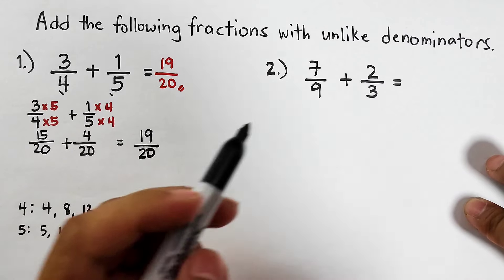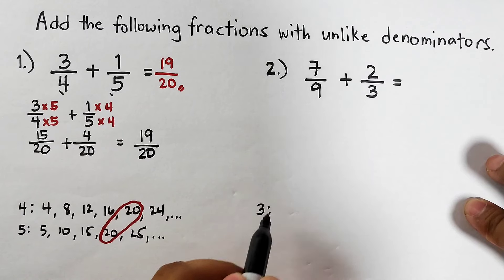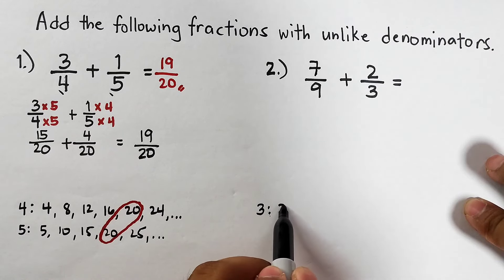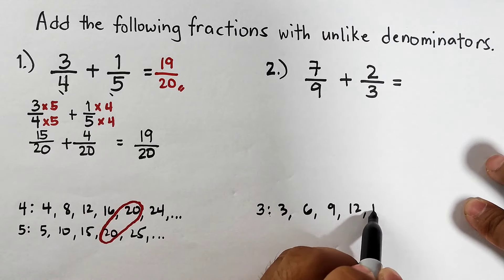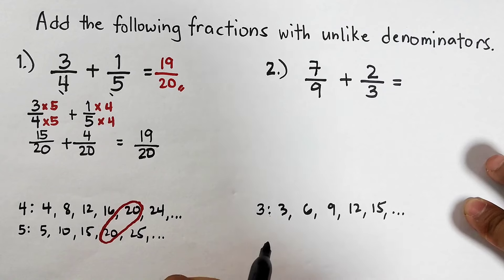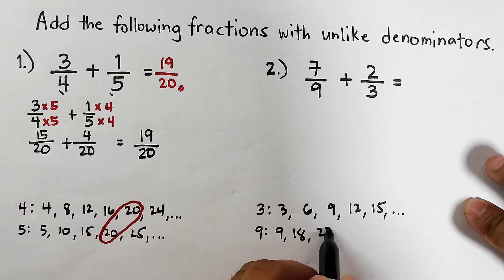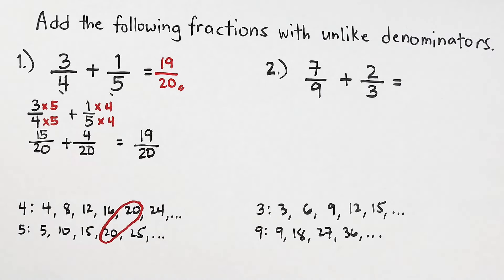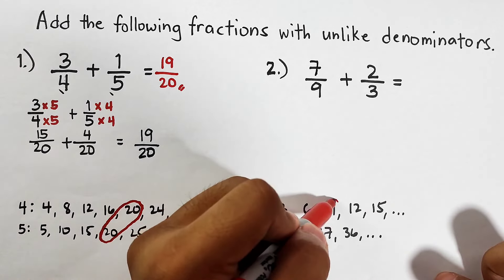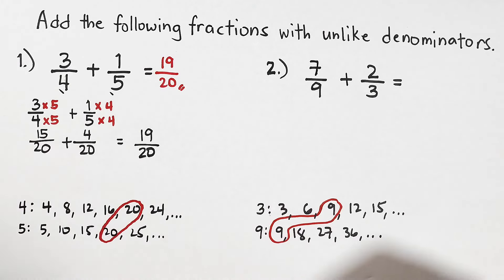For three, the multiples are three, six, nine, twelve, fifteen, and so on. For nine, the multiples are nine, eighteen, twenty-seven, thirty-six, and so on. Observing these numbers, the least common multiple is definitely nine.